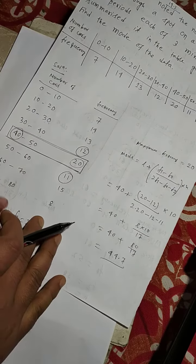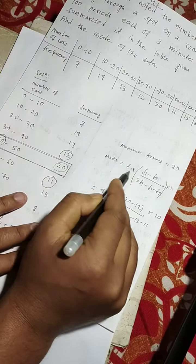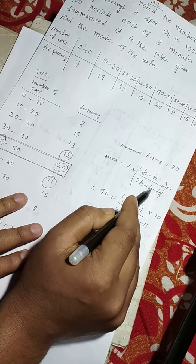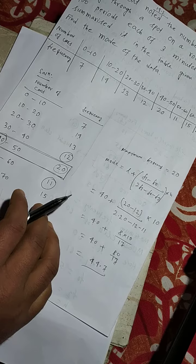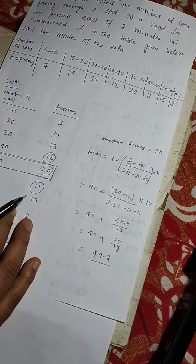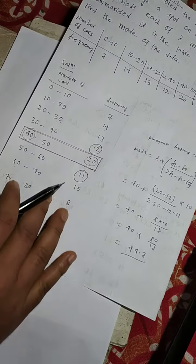So, now formula is mode equals to l plus (f1 minus f0) by (2 into f1 minus f0 minus f2) into h. h is the size of the class interval.